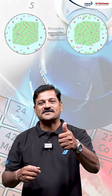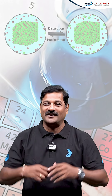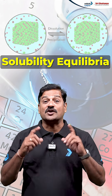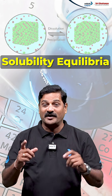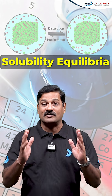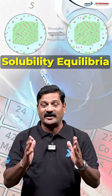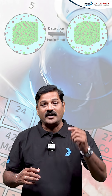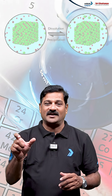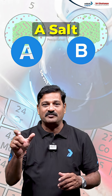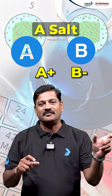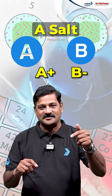The most important topic in ionic equilibrium is solubility equilibria, in which the solubility product constant is very important. For a saturated solution, let's say a salt AB gives rise to A⁺ and B⁻ in equilibrium.